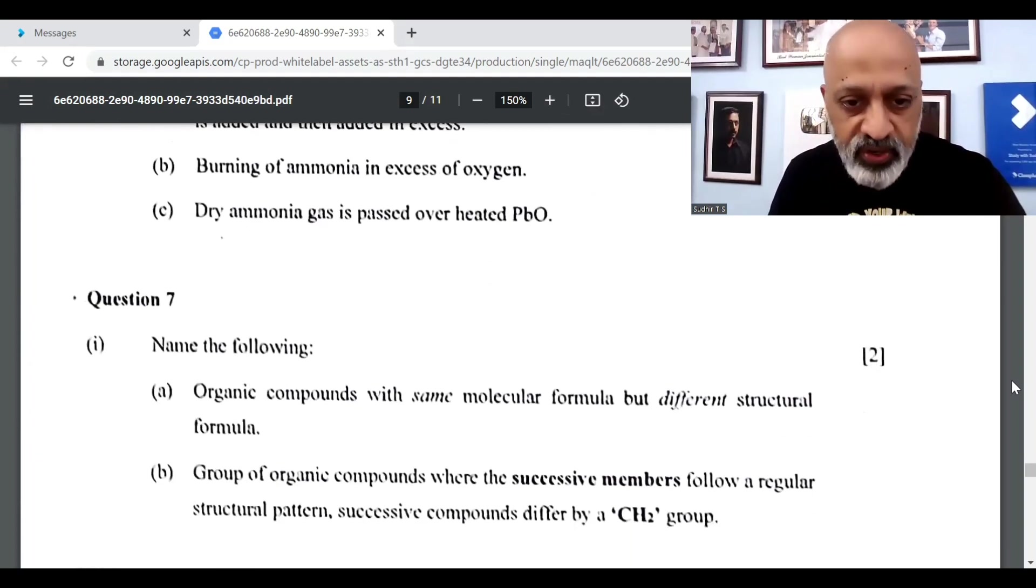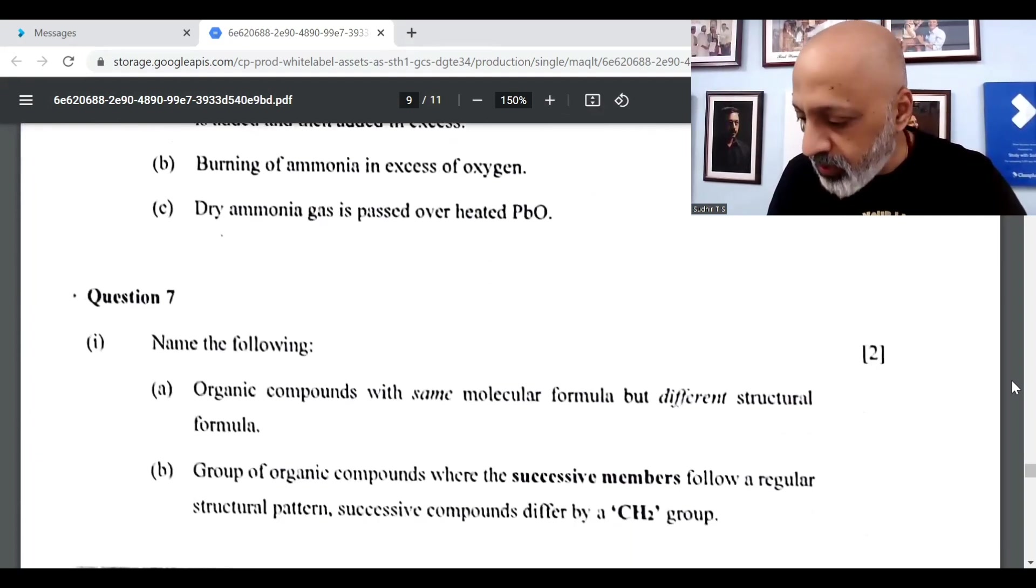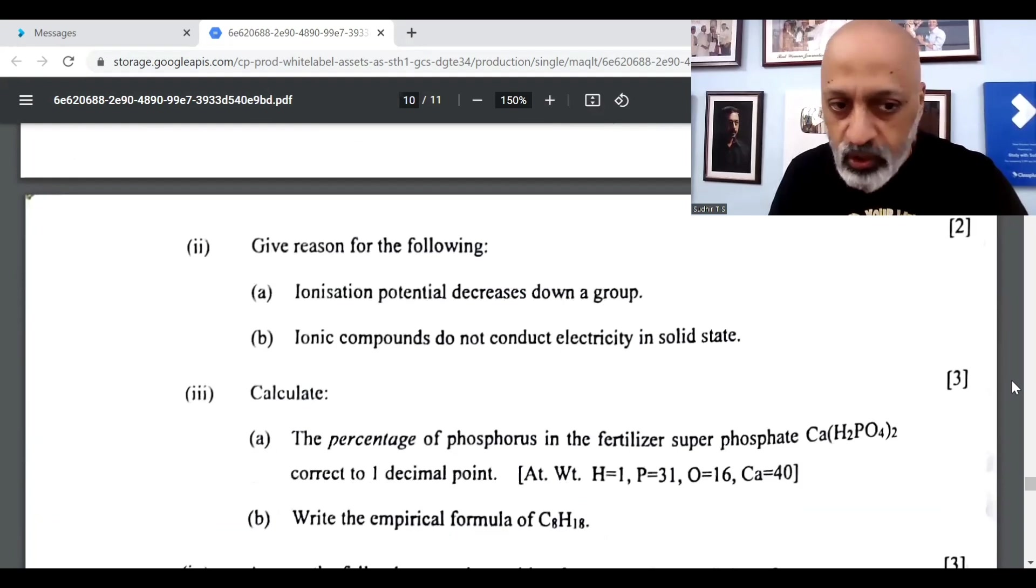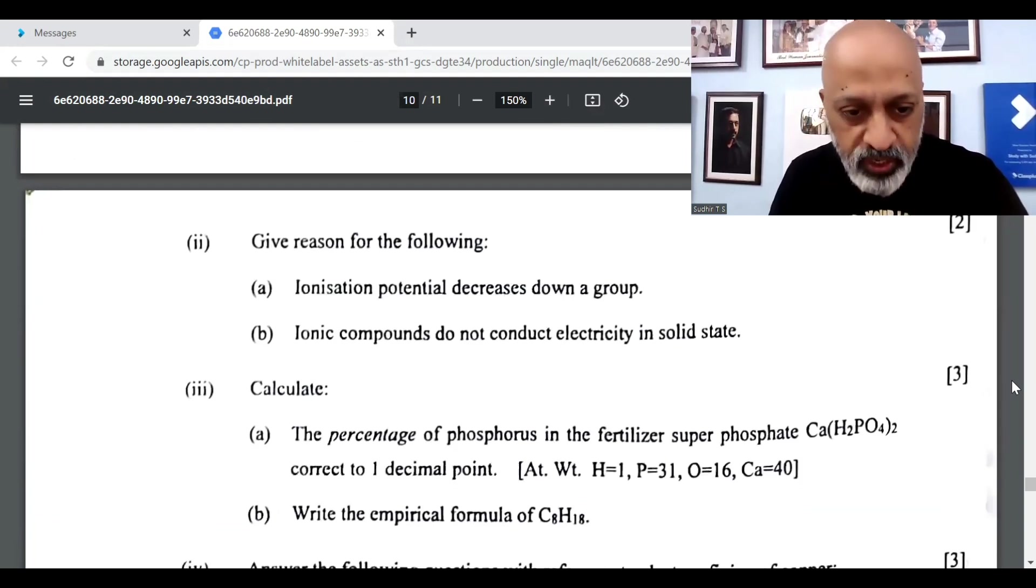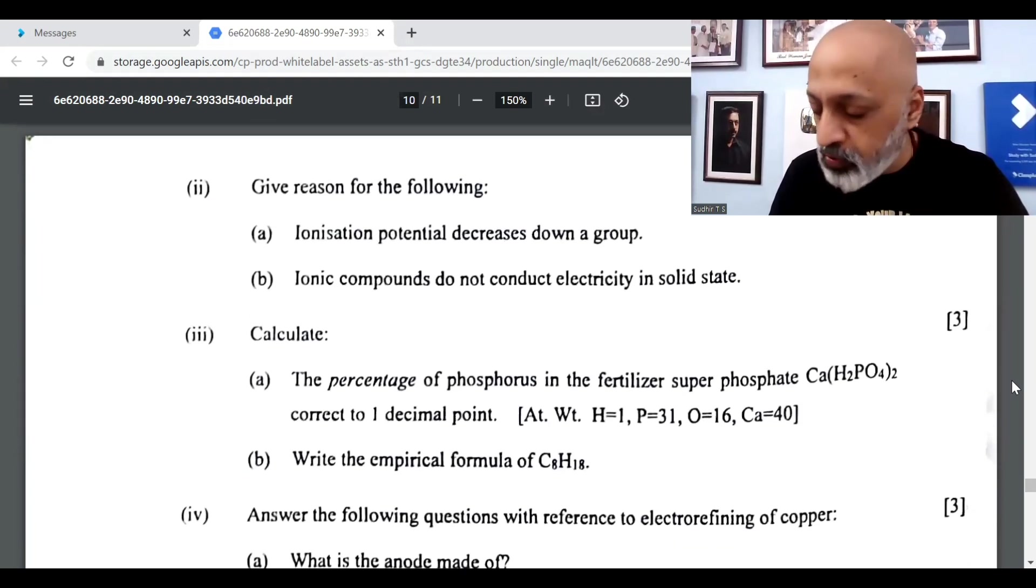Then we come to question number 7. Isomers or isomerism. Then B is homologous series. The second one is a reasoning question. Then it's a numerical process. Write the empirical formula of C8H18 will be C4H9.